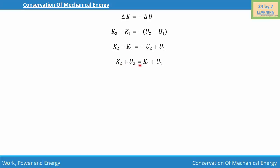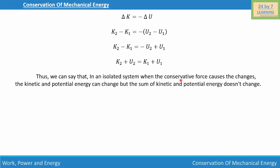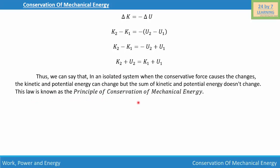The sum of the initial kinetic energy and potential energy equals the sum of the final kinetic energy and potential energy. So in an isolated system, when a conservative force causes changes, the kinetic and potential energy can change individually, but their sum does not change — it remains constant. This law is known as the principle of conservation of mechanical energy.